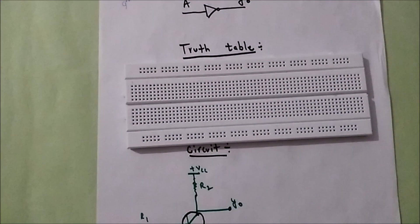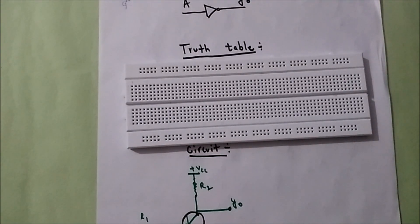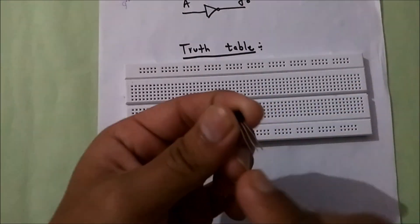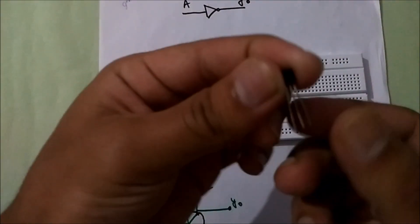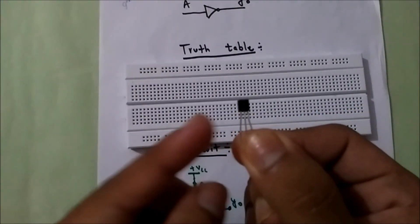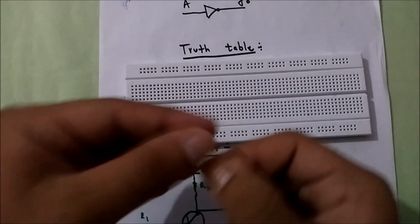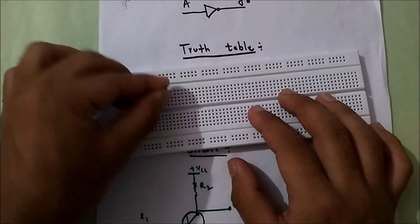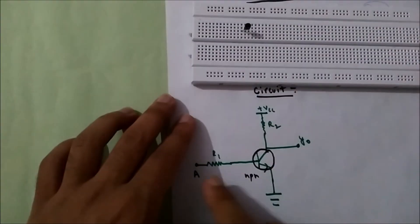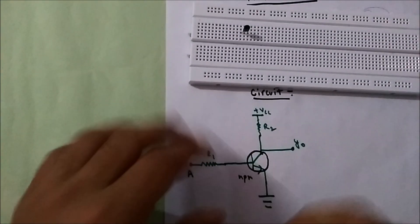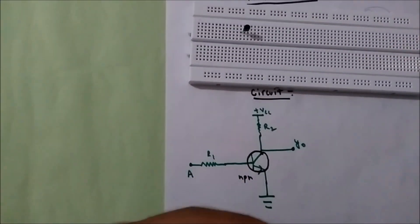To make a simple NOT gate, we need a transistor. In this case I have used a BC547 transistor. The terminals are as follows: collector, base, and emitter. If I hold it in this way, that means collector, base, and emitter. I'll connect it like this.